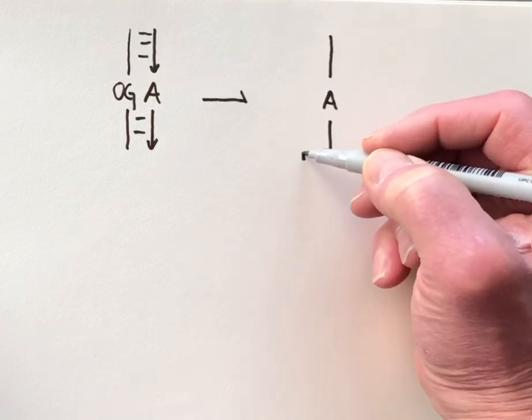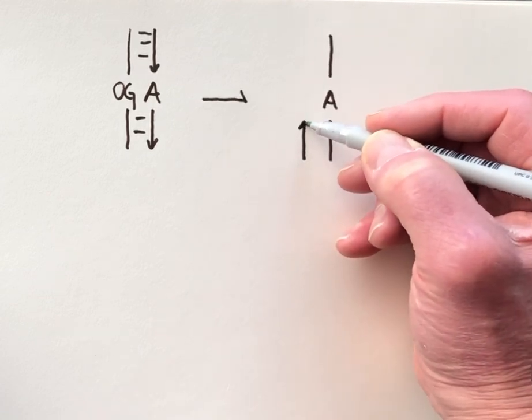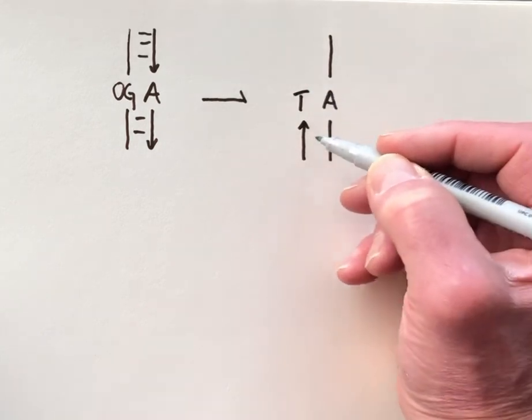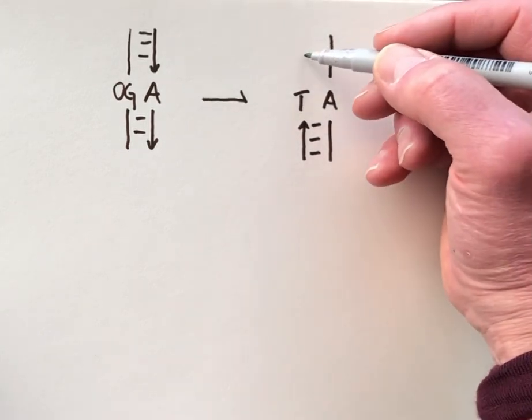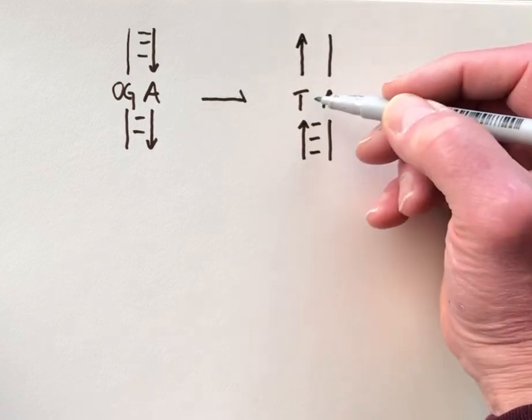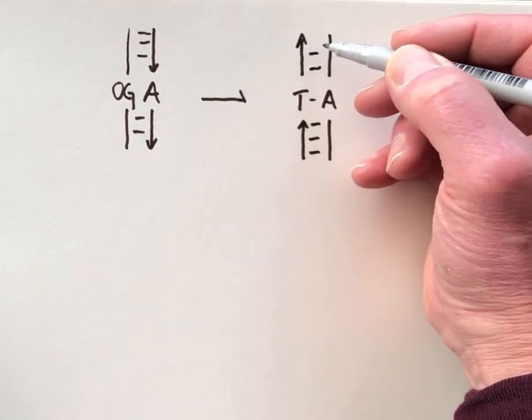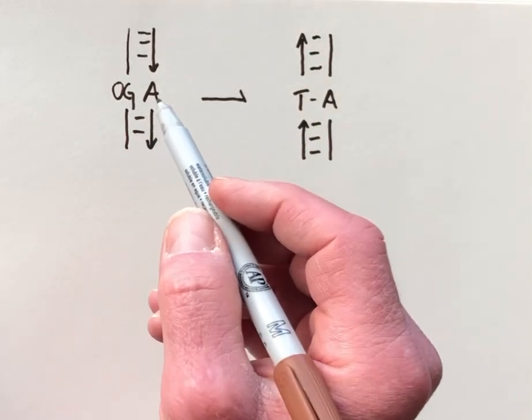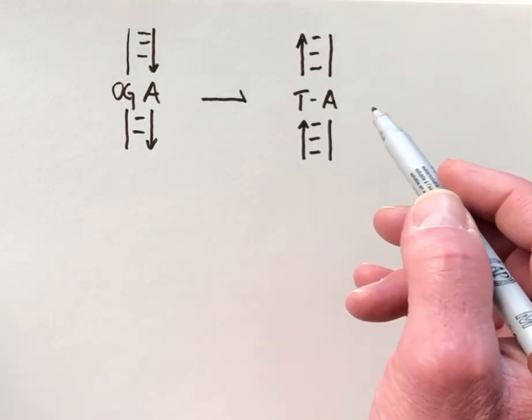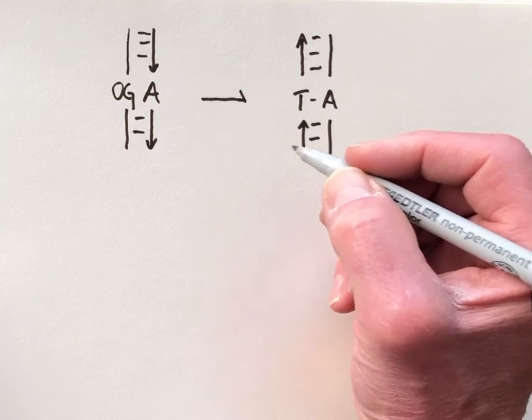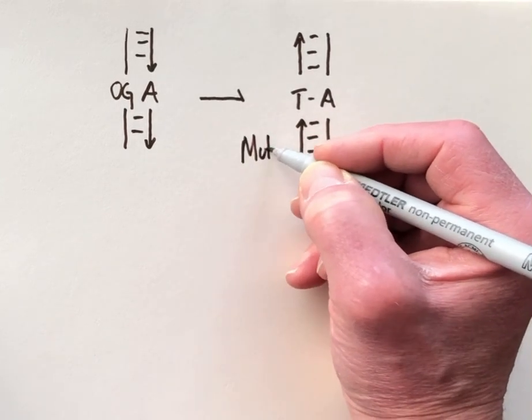DNA polymerase will not hesitate but put a T to make a Watson-Crick-Franklin base pair at this site. And now what used to be an OG or a GC base pair has become a TA mutation. So we'll label this thing here as the mutation.